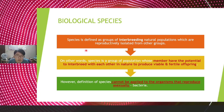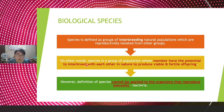However, the biological species definition cannot be applied to organisms that reproduce asexually. For example, bacteria — bacteria can reproduce on their own without interbreeding with another organism. They simply reproduce by themselves to produce more bacteria. So this species concept cannot apply to bacteria and other asexually reproducing organisms.